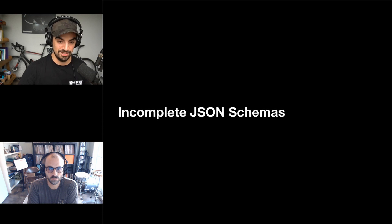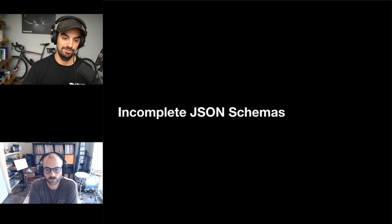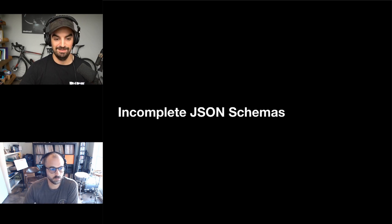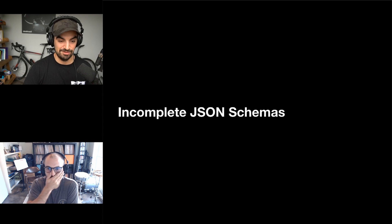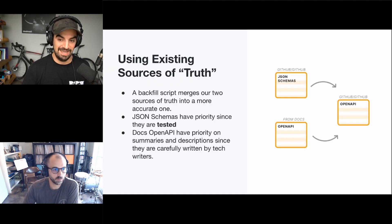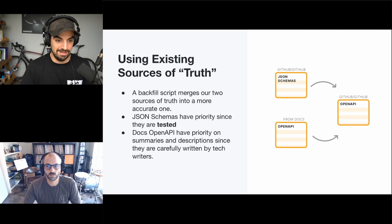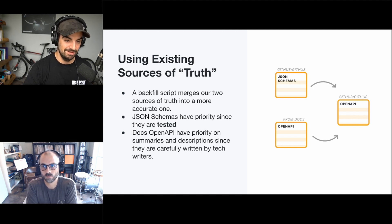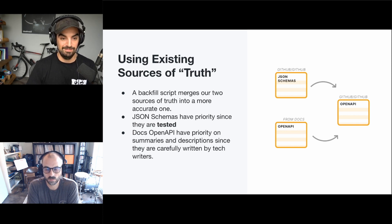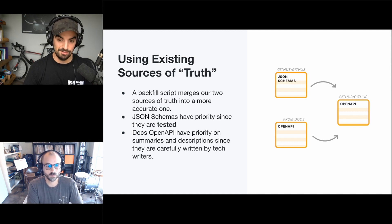The other source was JSON hyper schemas in the code base. These were actually used for validating requests and responses, but they didn't represent all endpoints and generally only described request bodies, not response payloads. So we generated a new OpenAPI description by merging both sources with a backfill script. When it encountered a request body it preferred the JSON schemas, but for summaries, descriptions, or response payloads it preferred the docs OpenAPI. The result was hopefully best of both worlds, though we still couldn't trust it entirely.